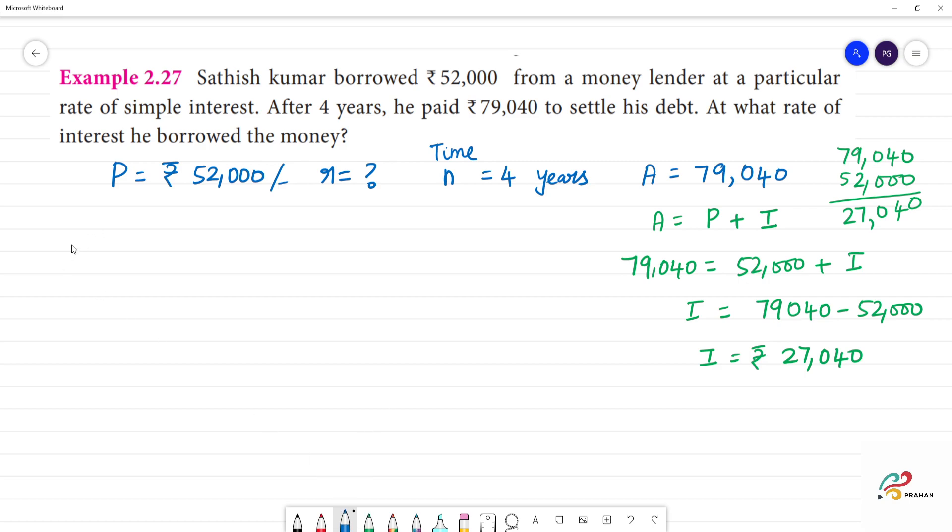Now, what do we do? We know that I is equal to PNR divided by 100. So, I am going to write that I into 100 is equal to P into N into R. If we rearrange, I into 100 divided by PN equals R.